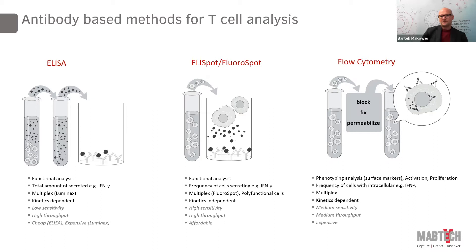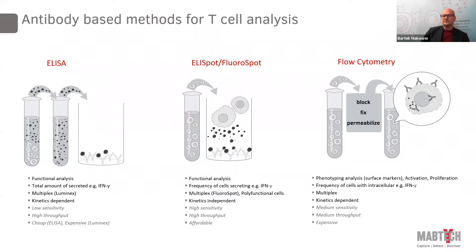Flow cytometry — you can use it to look at cytokine release, but then you need to use cytokine release blockers to actually look at intracellular cytokine accumulation rather than cytokine secretion. It's highly multiplex. It's kinetics-dependent — I'll come back to that in the next slide. It's medium sensitivity compared to FluoroSPOT, medium throughput, and quite expensive. You need to fix and permeabilize the cells, so you need to stop the assay at a certain point.